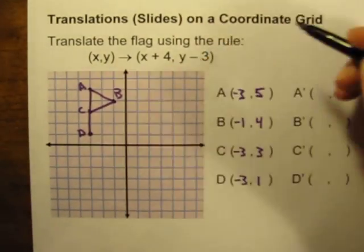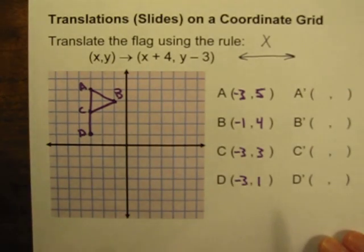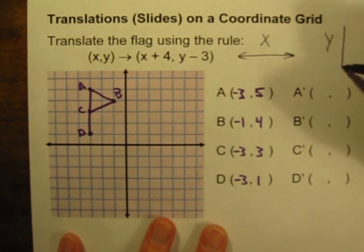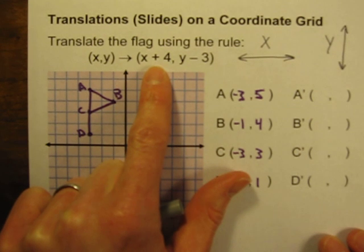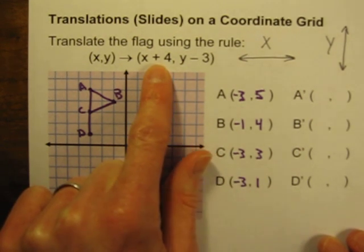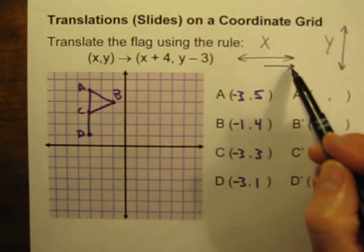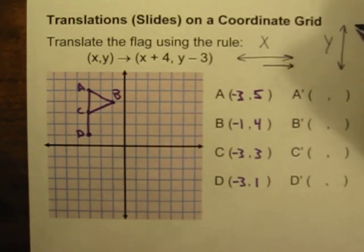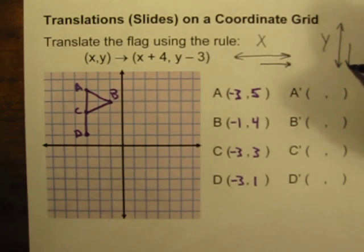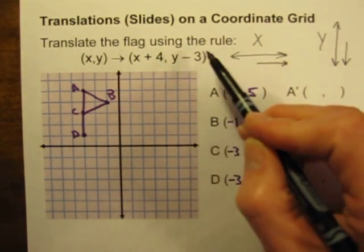So what does that mean exactly? The x coordinate always deals with your distance going left or right — left to right movement. The y coordinate always deals with up and down movement. Adding 4 to x means we're going to be going 4 units to the right. And this minus 3 — subtracting 3 from y means going down 3. So this translation is taking every point and moving it 4 units to the right and 3 units down.